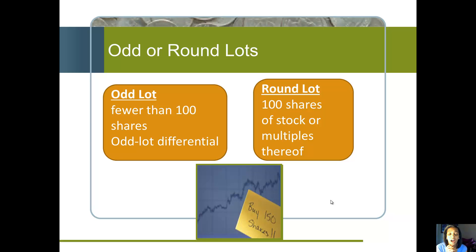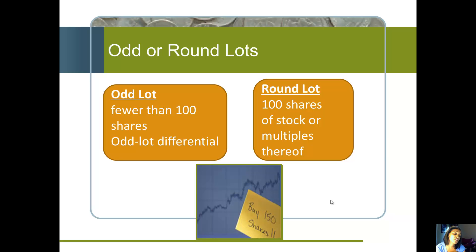Now, more terminology — odd lots or round lots. It used to be that you could only buy stock in round lots, meaning multiples of 100 shares. But now, with the advent of online trading, you can buy one share of stock if you want to. The problem with that is you're going to pay a transaction fee for every transaction, so your price per share will be much higher the smaller the quantities are.